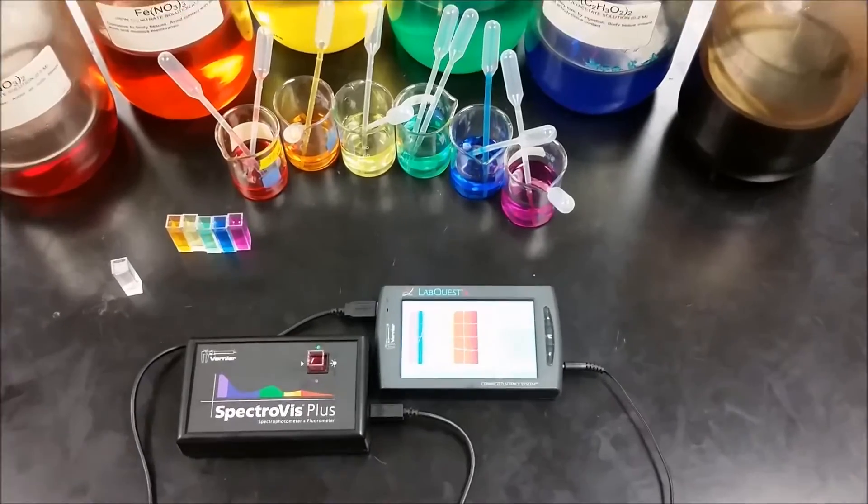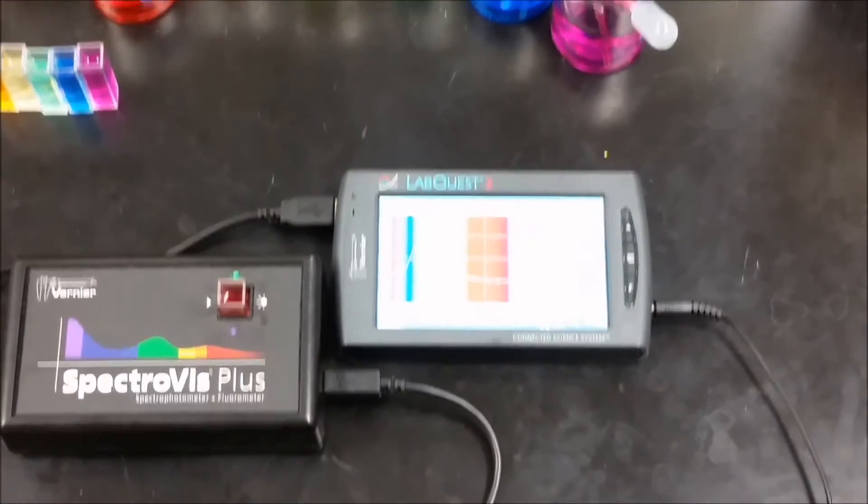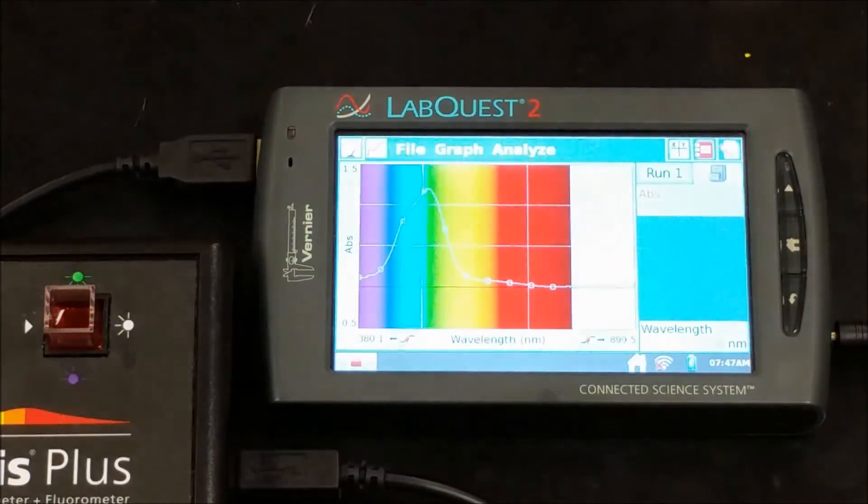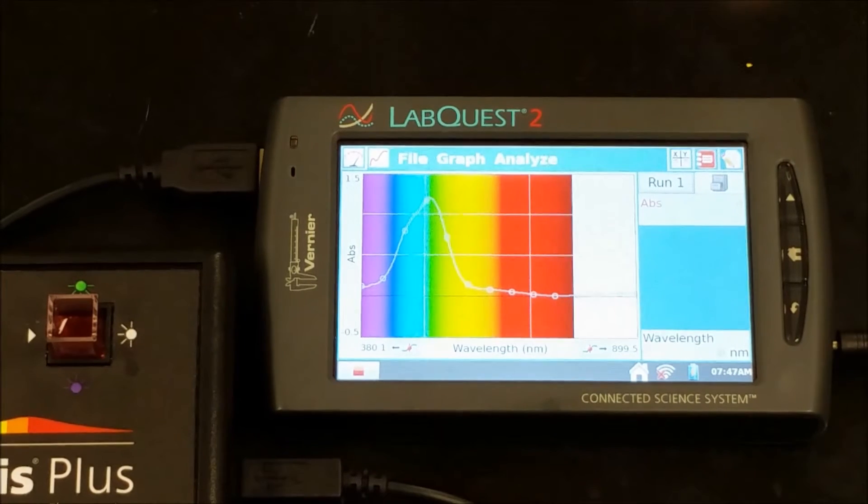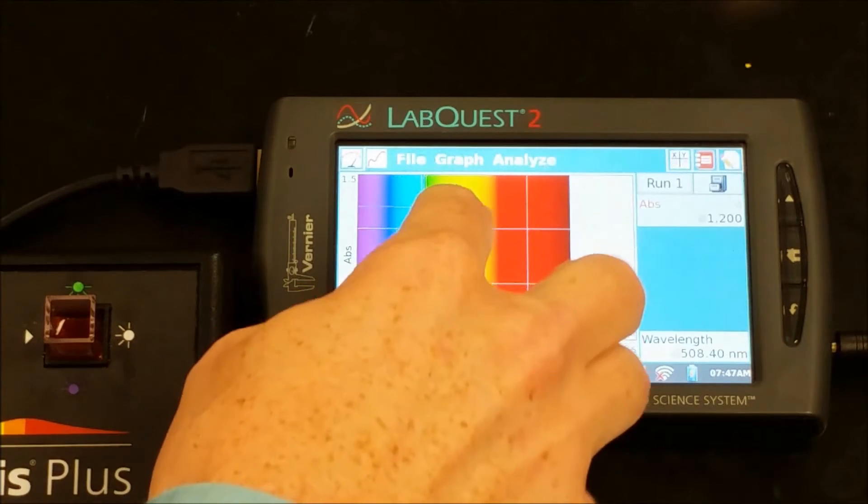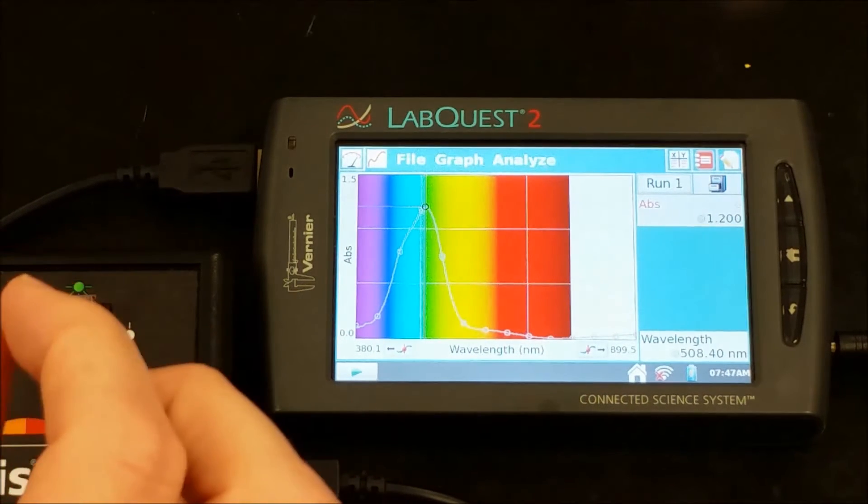Let's go ahead and zoom in so we can see that nicely. If we hit stop here, what we see is that we have a peak right in that green-blue barrier.